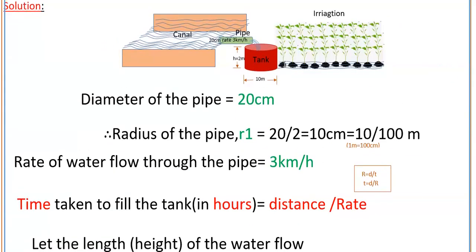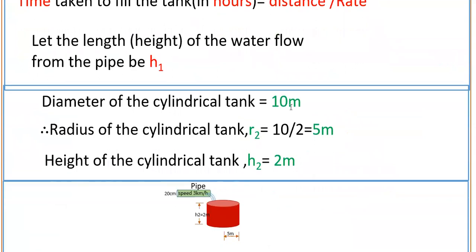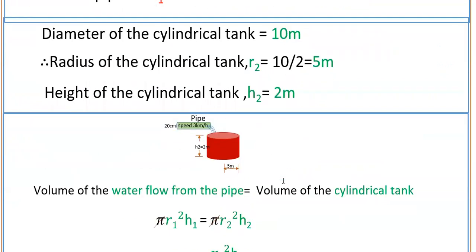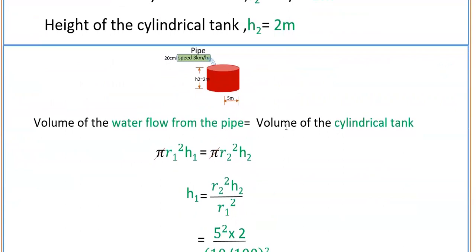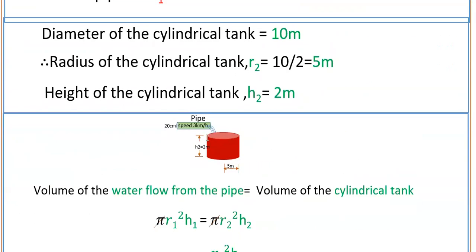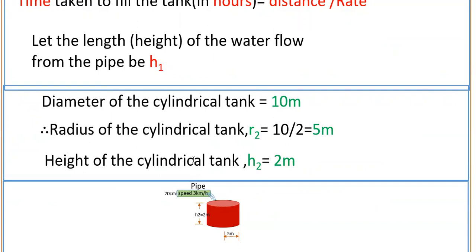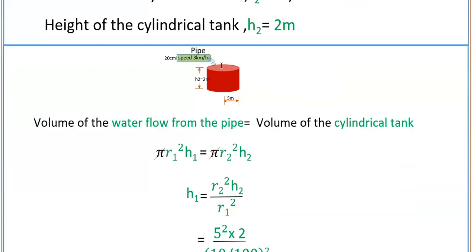The measurements of the cylindrical tank are also given. Diameter is 10 meters, so radius r2 is 10 by 2, that is 5 meters, and the height of the cylindrical tank is 2 meters. The volume of the water flow from the pipe is equal to the volume of the cylindrical tank. We have to equate the volume of water flow from the pipe to fill the cylindrical tank, and the length of water flow for this time is h1. So first we find the h1 value.